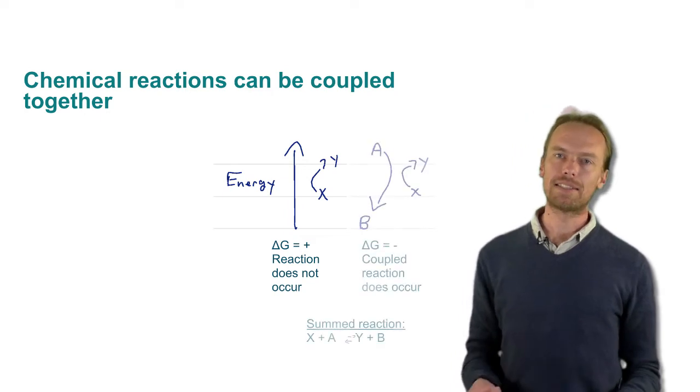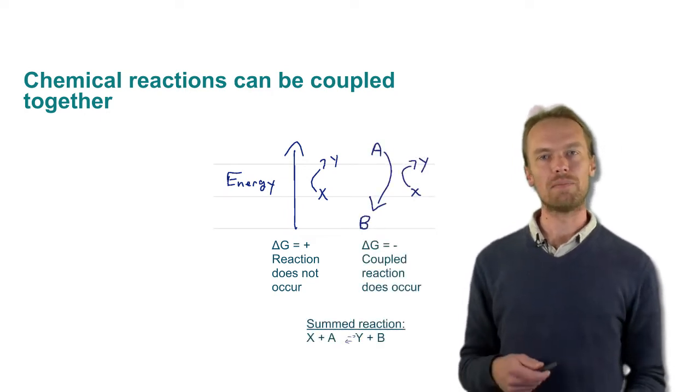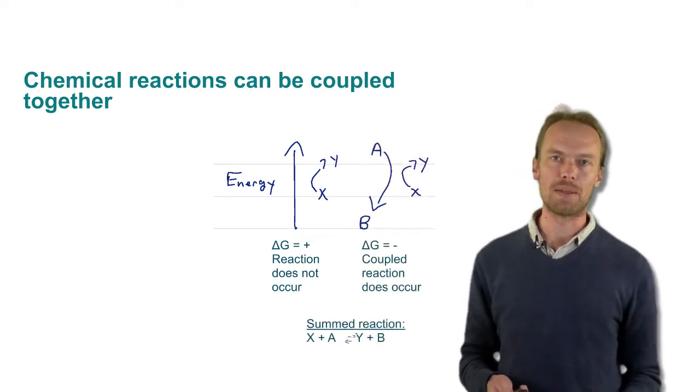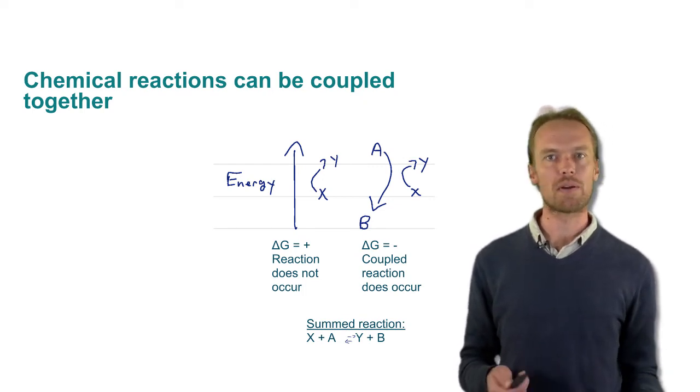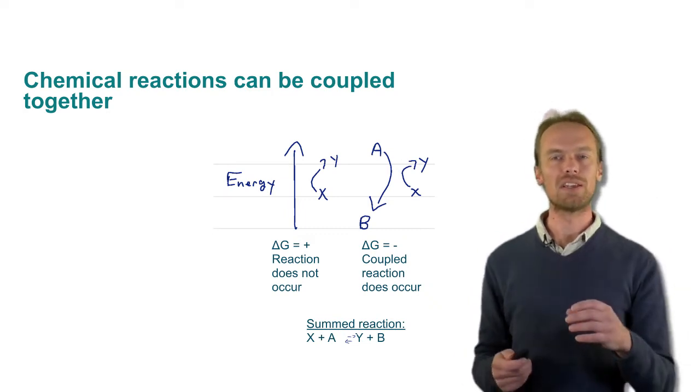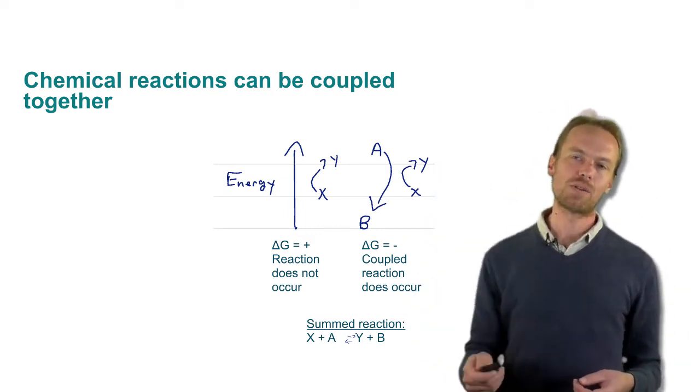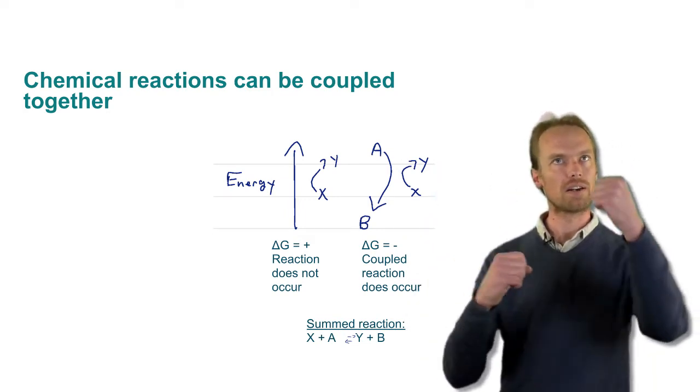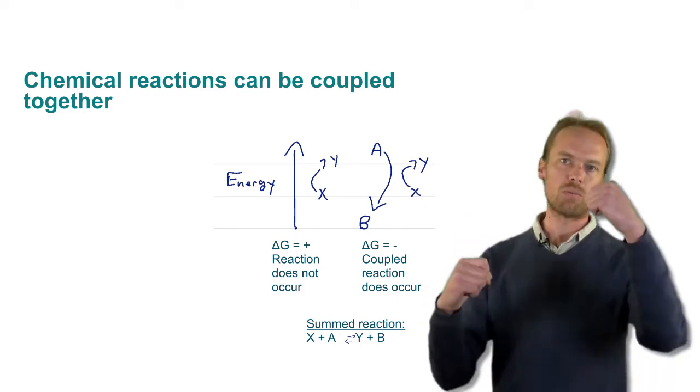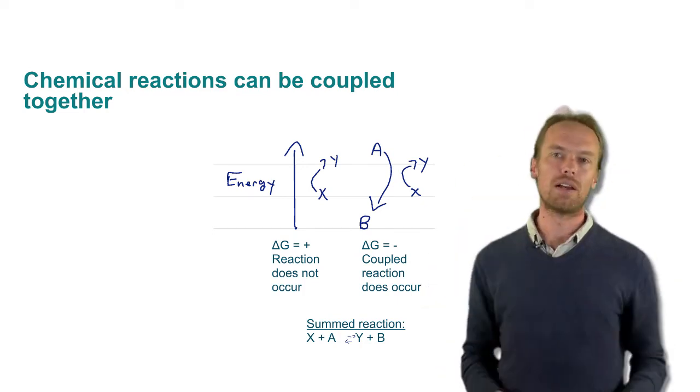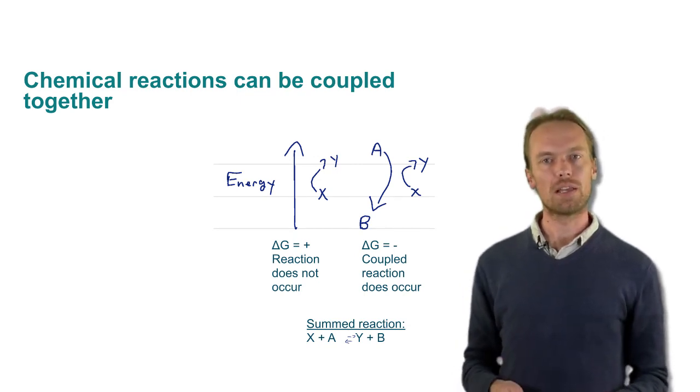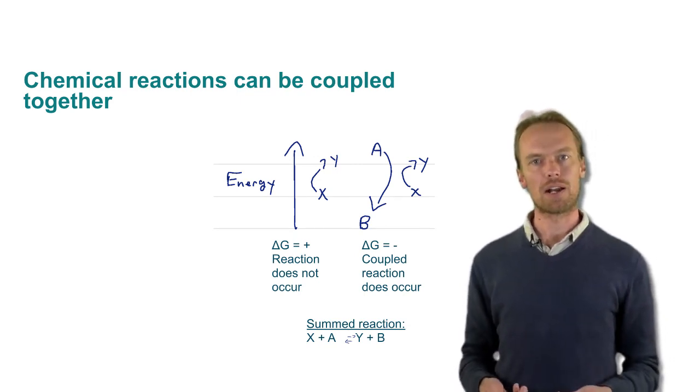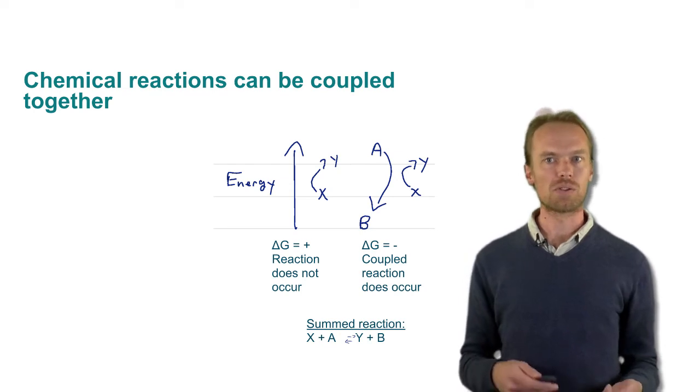However, let's imagine we have a second reaction that we could add into the system. A goes to B. And if A going to B is downhill and releases some amount of energy, we can imagine coupling A going to B to X going to Y. So this is a way of kind of gearing or transferring one energy of reaction to another. The overall process would now become favorable. So we could think about this summed reaction. X plus A goes to Y plus B.